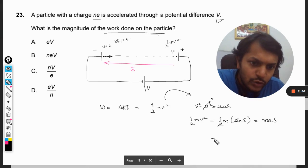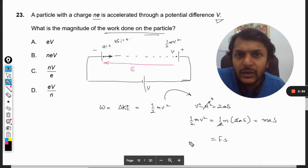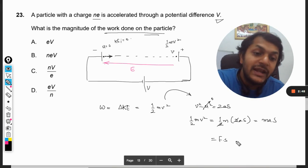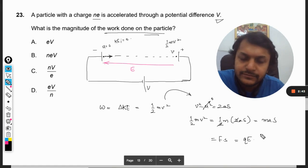So this is equal to F into s. Now s is the distance that was traveled and F is the force. From electrostatic point of view, the force is q times e, and s is the length l of the accelerator.